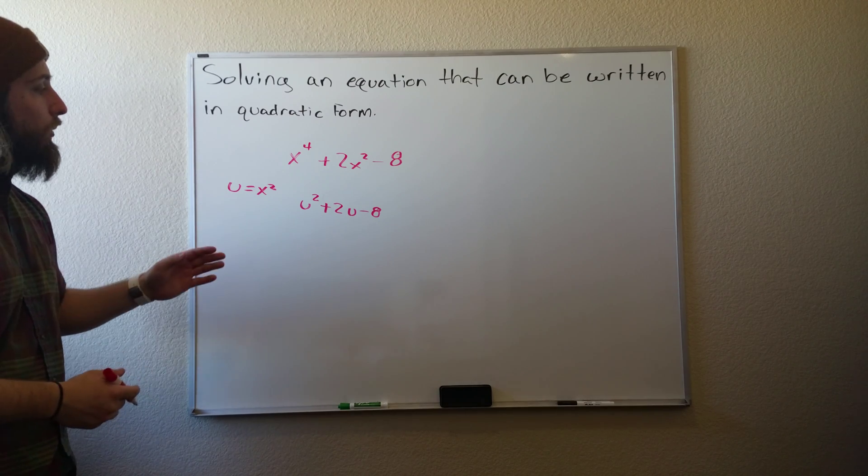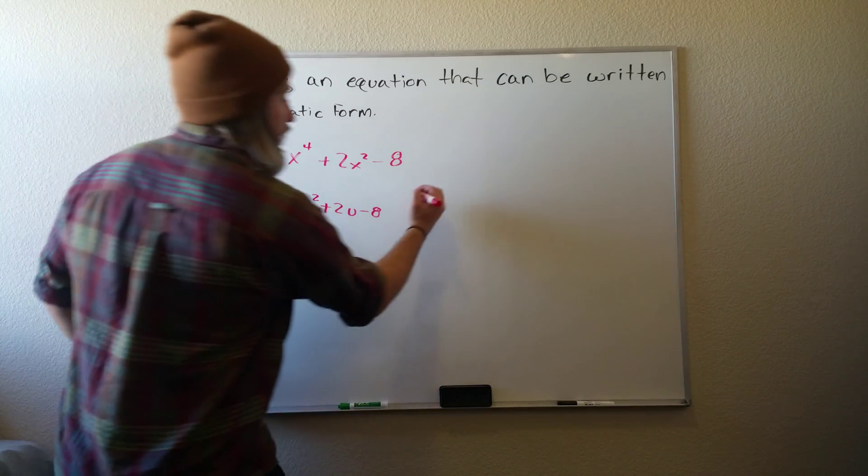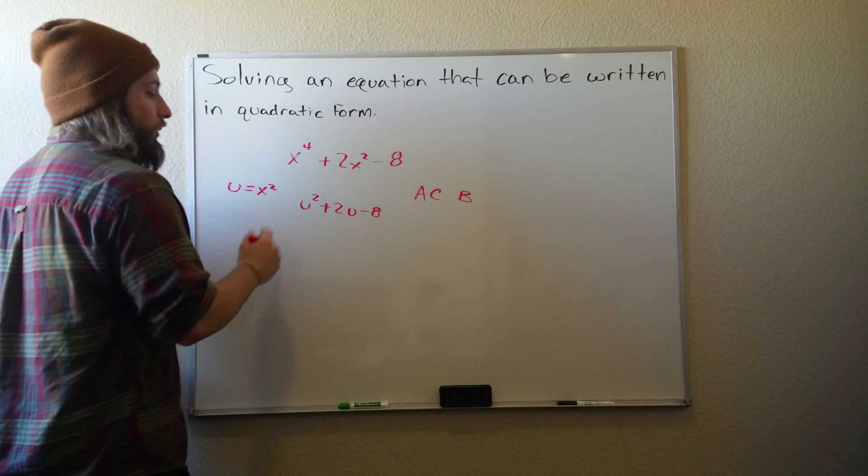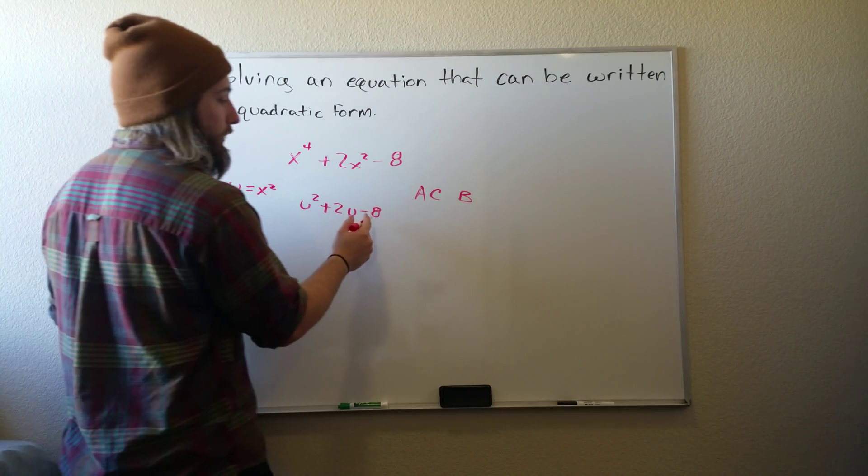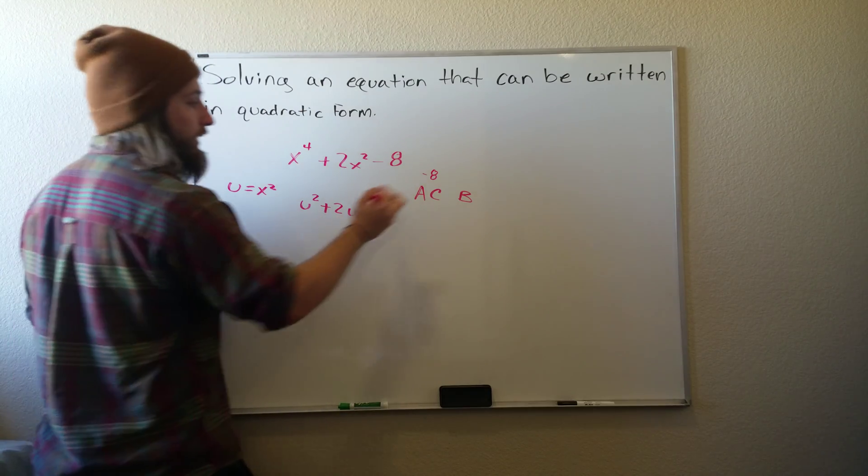So what we'll do from here is just ACB method or normal factoring, and I'll use the ACB method. So we know a is 1 and c is negative 8, so we get negative 8. And we know that b is 2.